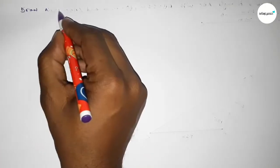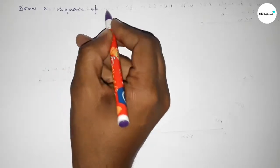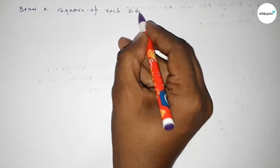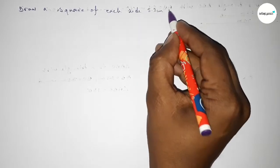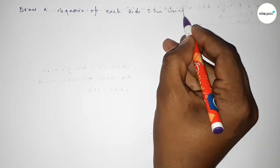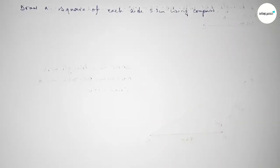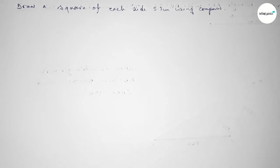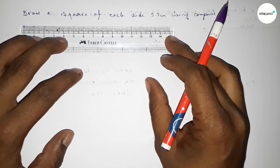Hi everyone, welcome to SSR Classes. Today in this video we have to draw a square of each side 5.3 centimeters by using a compass. So let's start the video. First of all, we have to draw a line.